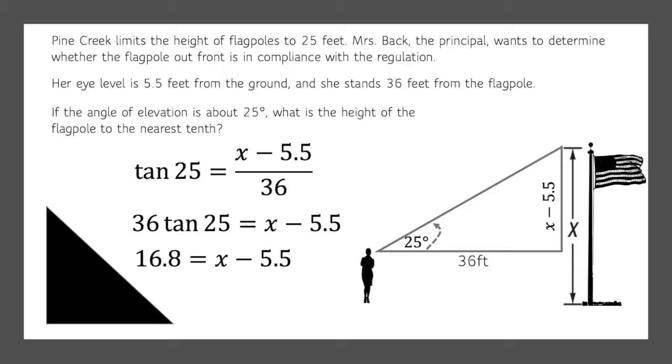36 times the tangent of 25 is 16.8. We'll add 5.5 to both sides and we see that x equals 22.3. That's the height of our flagpole. Now it needs to be less than 25 feet. Are we within regulation? Yes, we are!